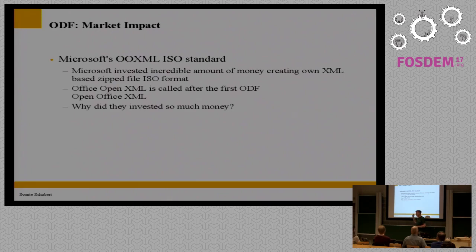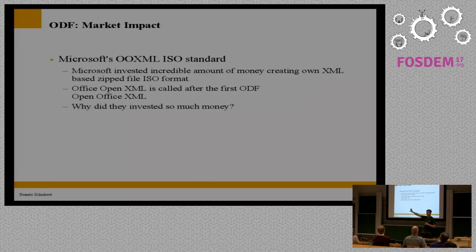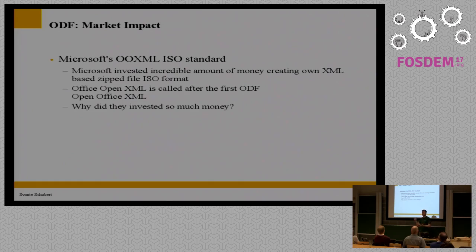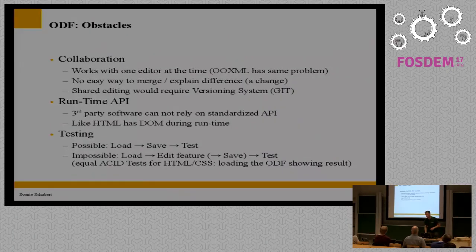The obstacles we currently have: first, collaboration. Sending documents around is not good enough anymore. We want to merge easily — like source control for code. There's no runtime API like HTML's DOM, which is one of the biggest obstacles for selling. And there's no feature testing: applications claim ODF support but deliver poor results. What we're doing is working at a higher level — saying something like 'I changed the one-millionth paragraph to red.' We abstract from XML details to what the user knows, and we hash on this logical level rather than on XML verbosity.